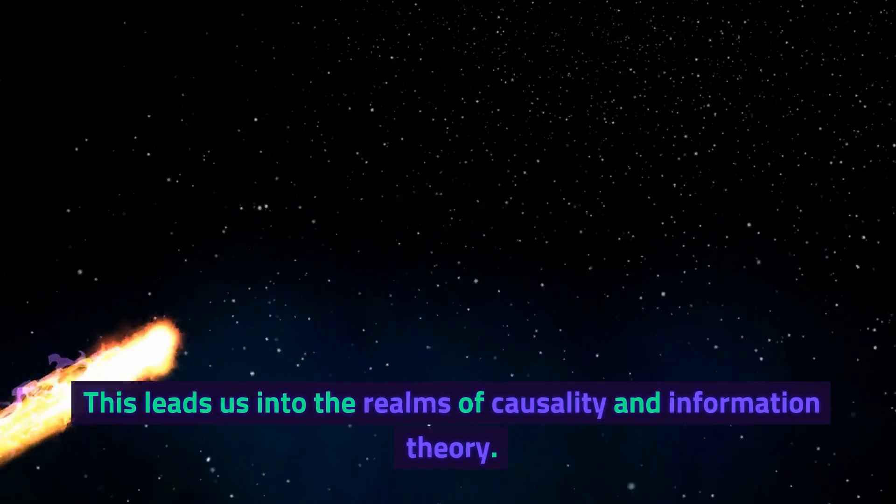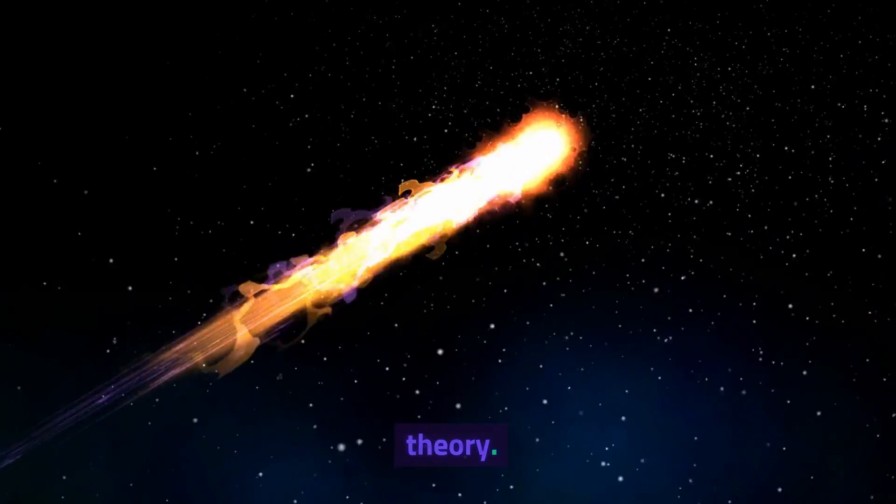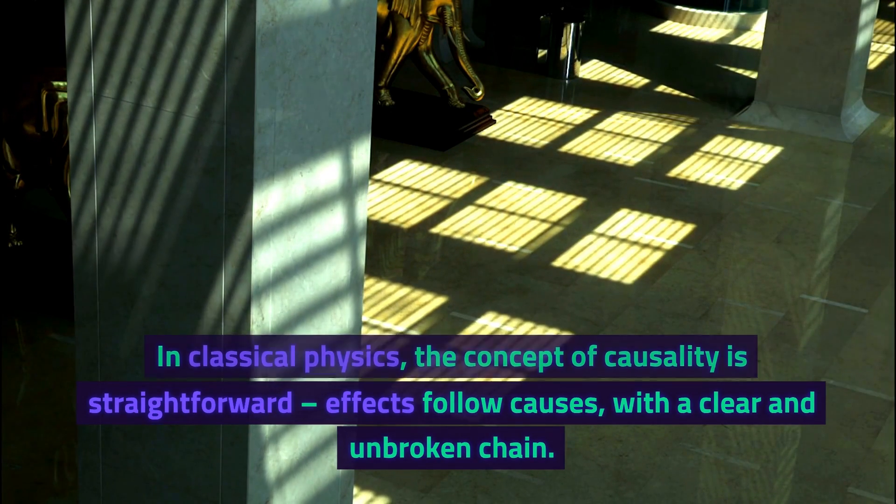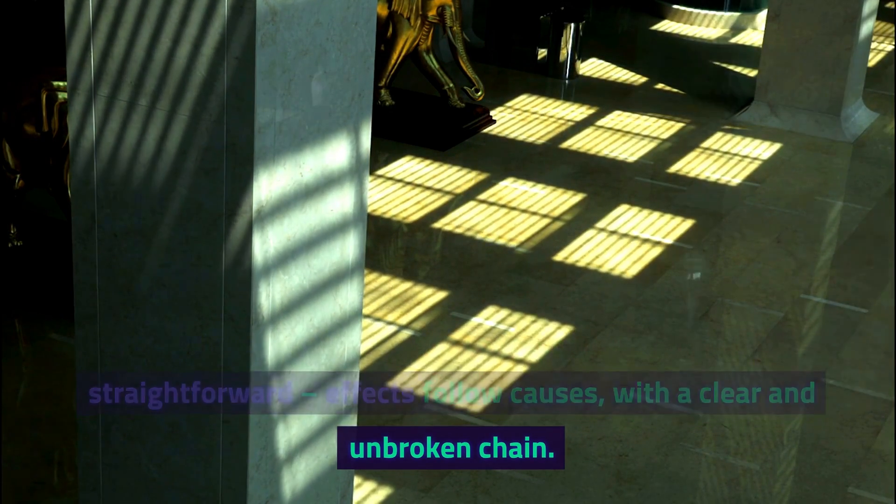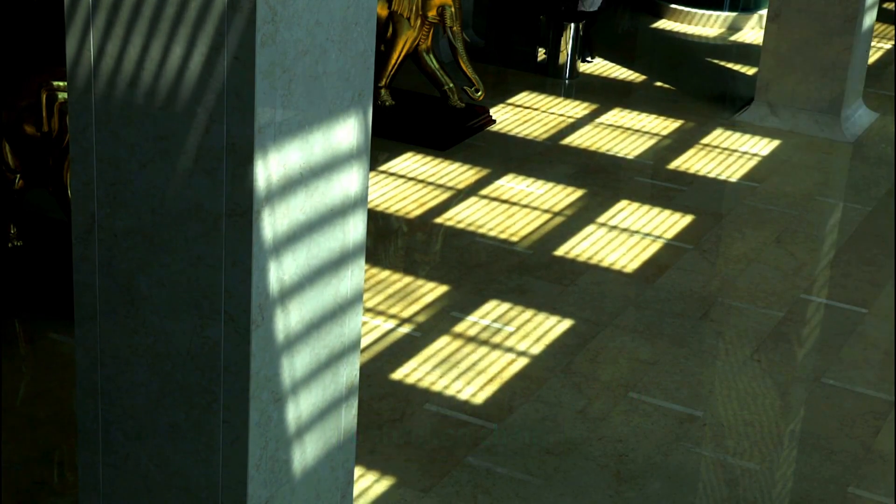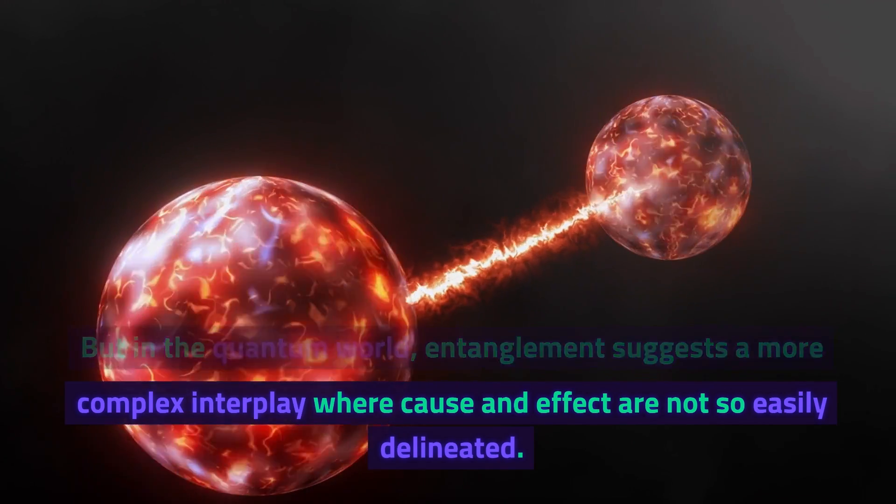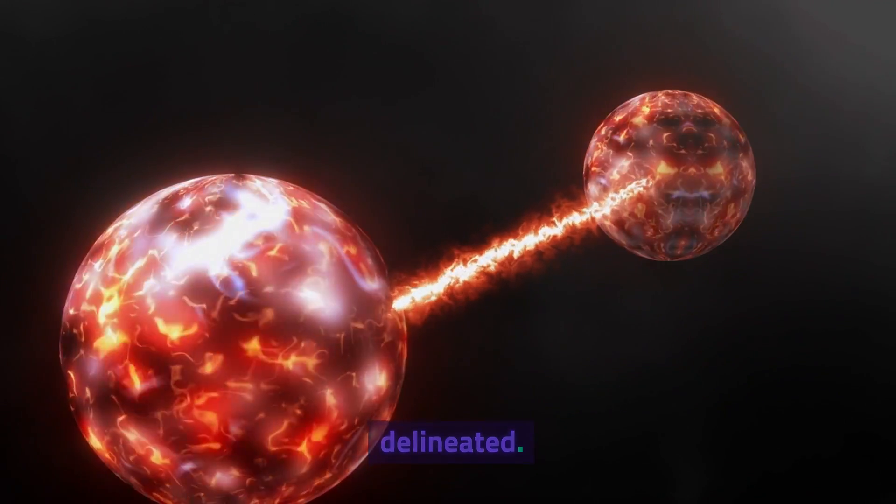This leads us into the realms of causality and information theory. In classical physics, the concept of causality is straightforward. Effects follow causes with a clear and unbroken chain. But in the quantum world, entanglement suggests a more complex interplay where cause and effect are not so easily delineated.